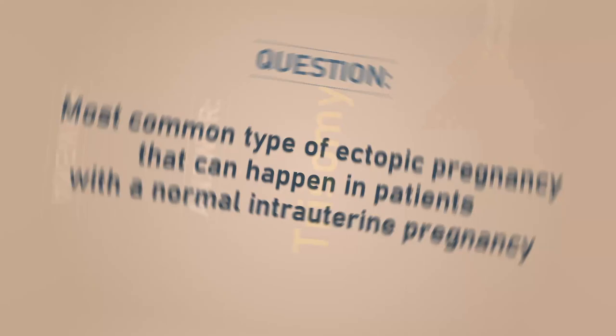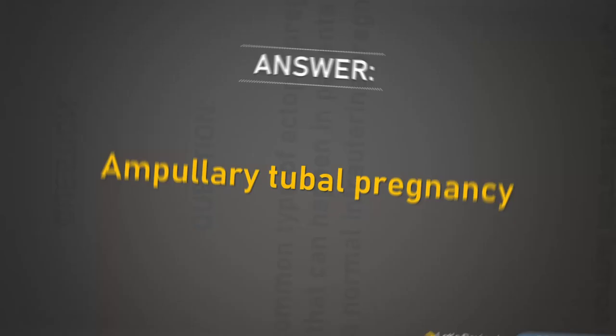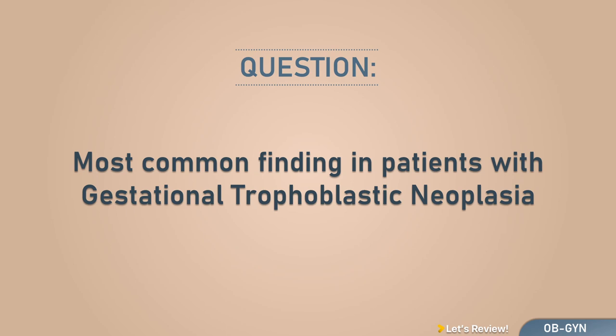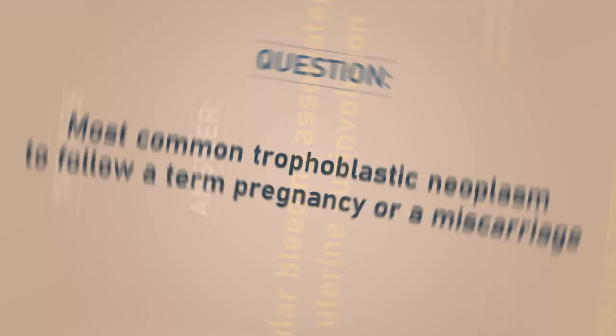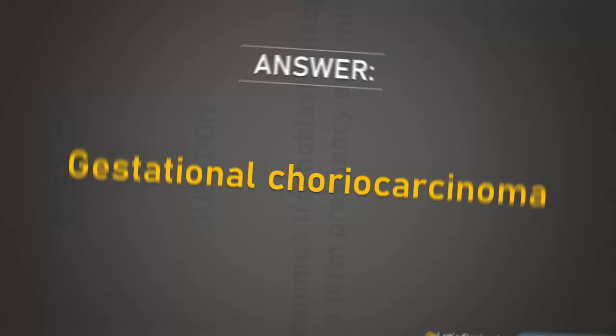Most common ectopic pregnancy: tubal. Most common particular bleeding associated with uterine subinvolution. Most common trophoblastic neoplasm to follow a term pregnancy or miscarriage: gestational choriocarcinoma.